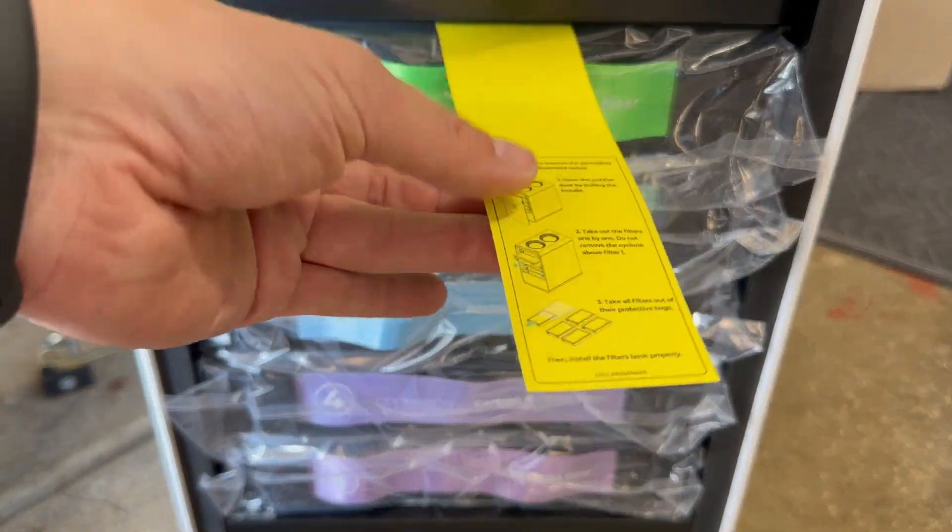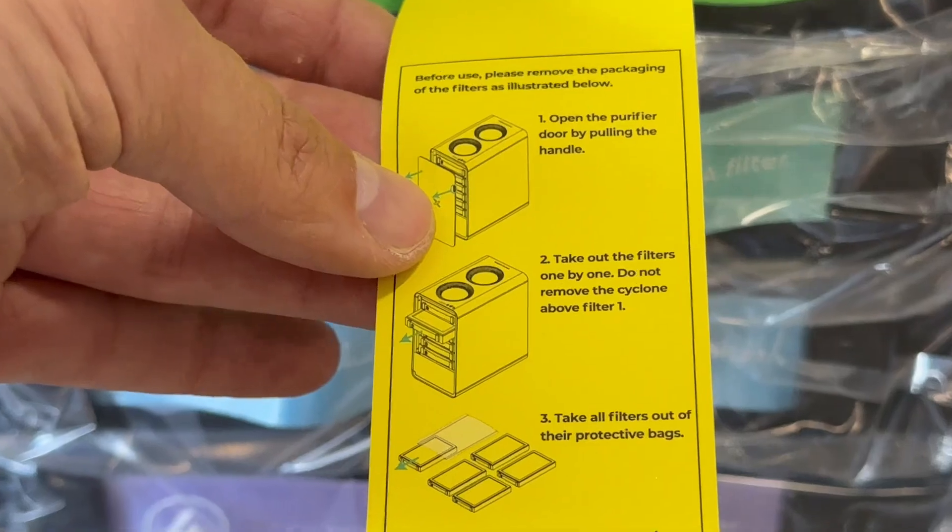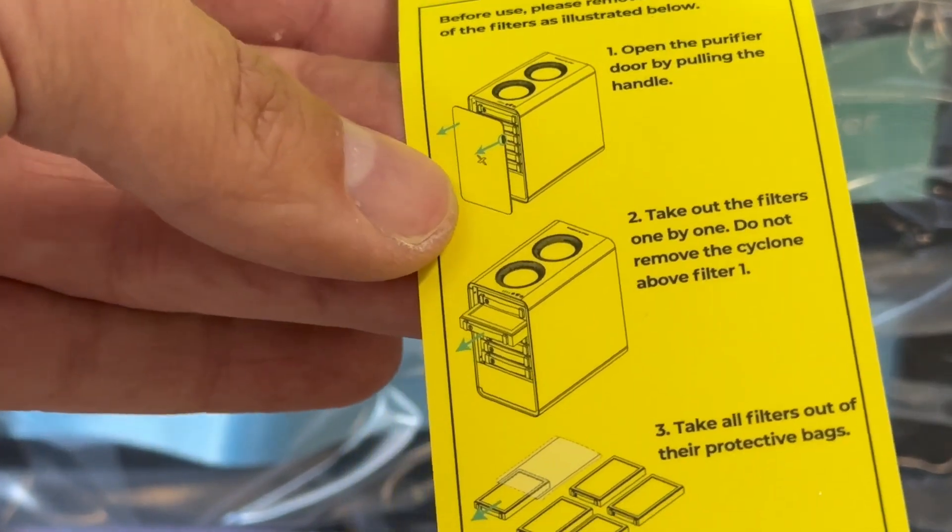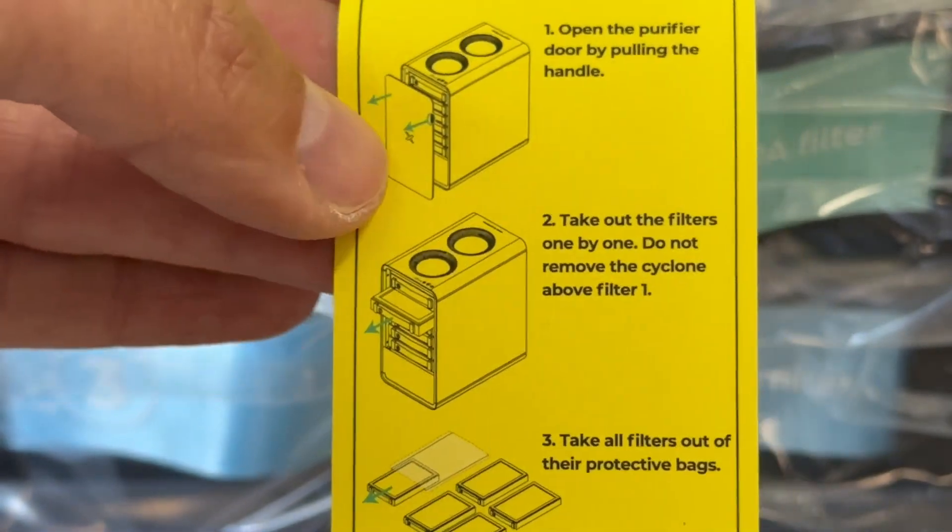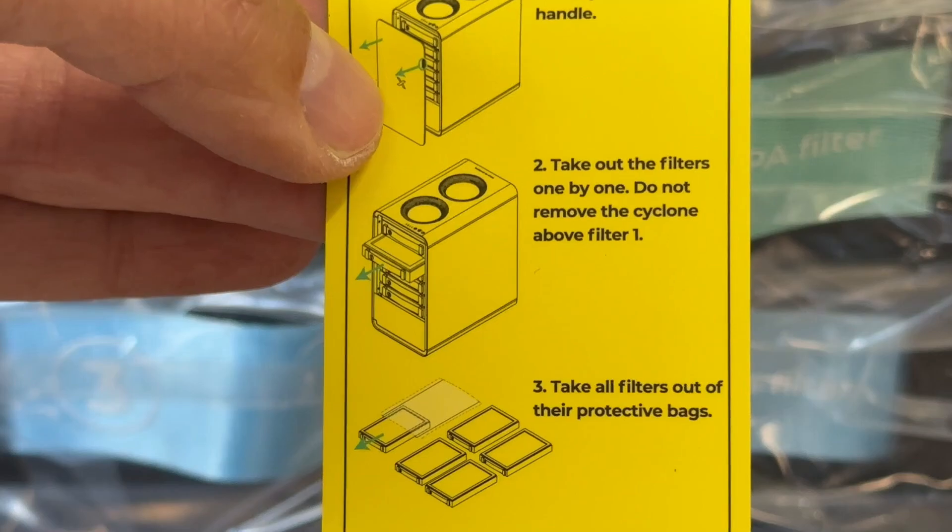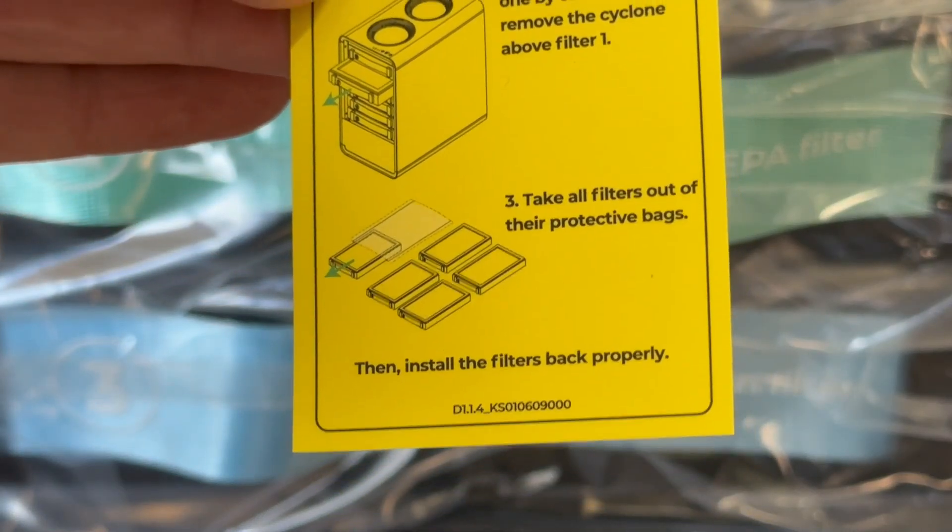Once you move the AP-2 out, you'll see this little yellow tag. It says remove the door and don't remove the cyclone. Oops, I didn't really follow those instructions, but let's continue on.